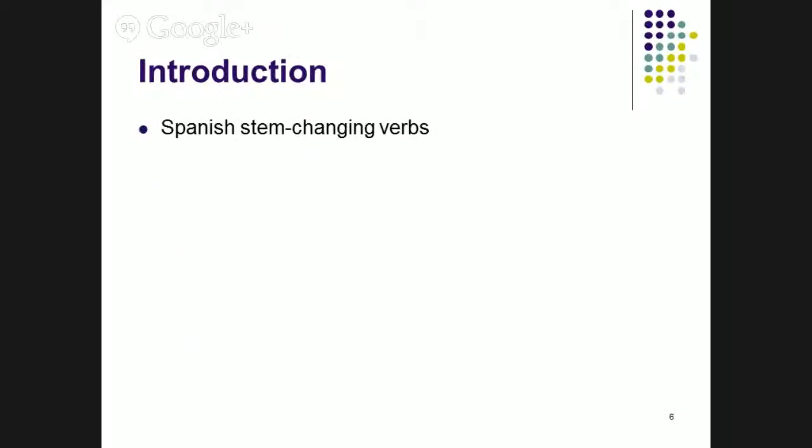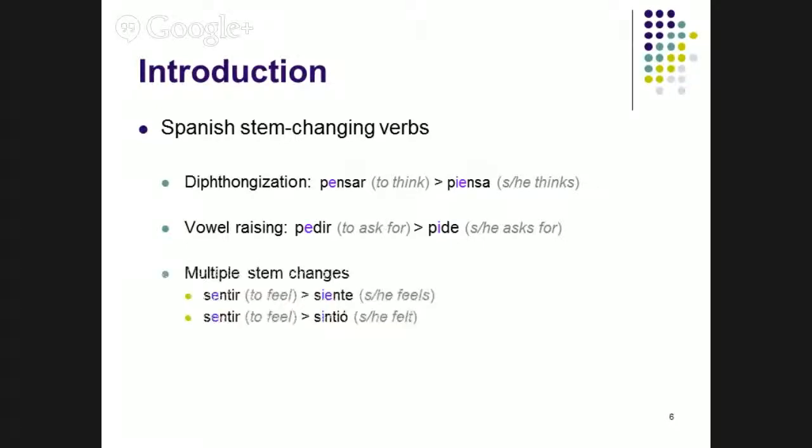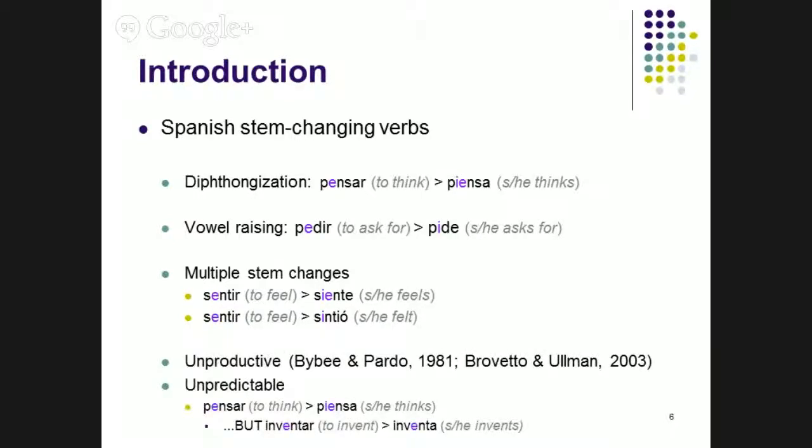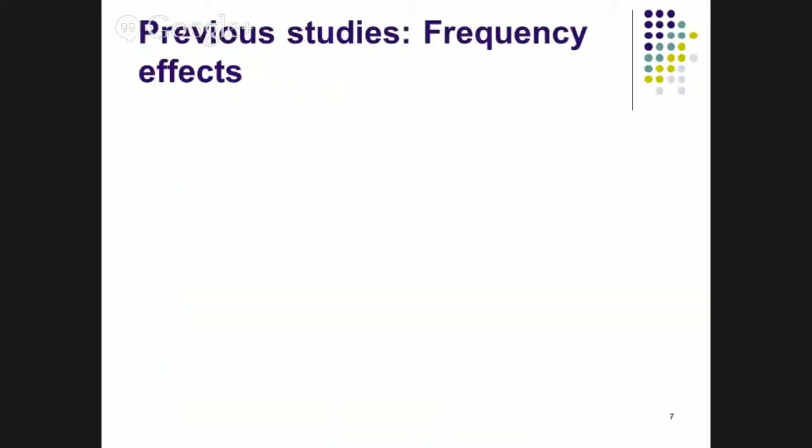Specifically, I look at Spanish stem-changing verbs, which means that in the vowel, right before the infinitive ending, there's either diphthongization or vowel raising. Another interesting thing is that the same verb can have both stem changes and even others, depending on the tense. So sentir becomes siente in the present tense and sintio in the preterite tense. Why might these stem changes make these verbs good candidates for listing or storage? They're unproductive. Speakers have been shown to not want to generate them to nonce forms, and they're unpredictable. So it seems that they might not represent productive morphological process. They might need to be memorized or listed in the lexicon.